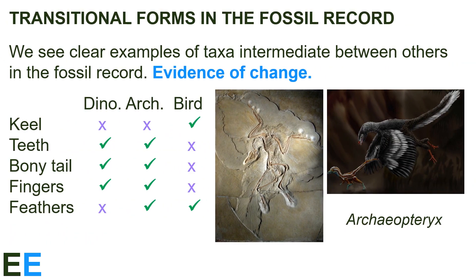We also see clear examples of taxa intermediate between others in the fossil record — more evidence of change. For example, the fossil shown is Archaeopteryx. This is an important fossil because it shows what a transition looked like. Dinosaurs, which are reptiles, do not have a keel, feathers, but they do have teeth, a bony tail, and separate fingers in their forelimbs. Birds have a keel and feathers, but lack teeth or bones in their tails, and their forelimb fingers are fused into little nubs. Archaeopteryx exhibits a mix of traits showing the transition: it has feathers like a bird, but its other features are more like a reptilian dinosaur, clearly showing an organism in transition between a previous organism and a subsequent one.